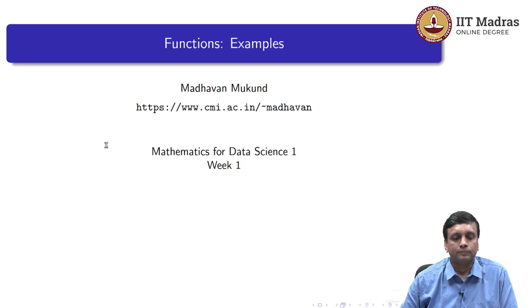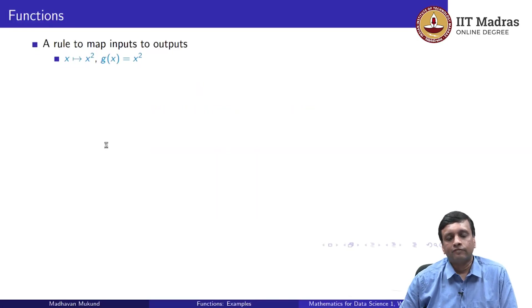Let us take a closer look at functions now. Remember that a function is a rule that maps inputs to outputs. For instance, if we are looking at numbers, a function could take an input x and map it to x squared, which we can also write as g(x) = x², which says g is the name of a function which when it takes an input of the form x produces an output of the form x squared.